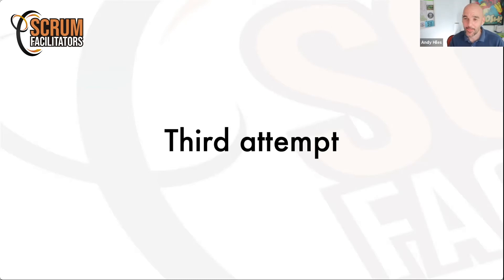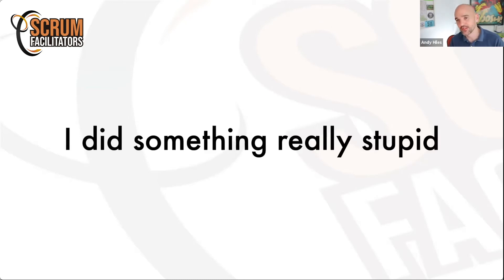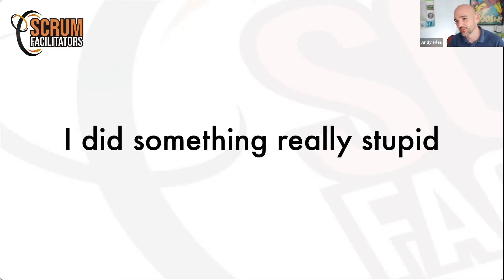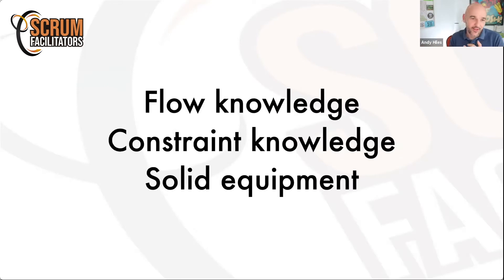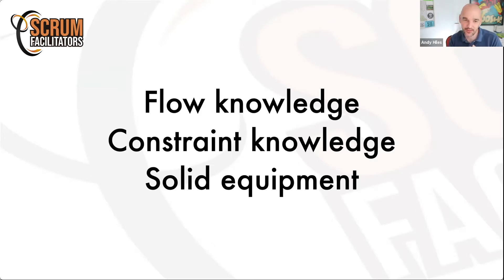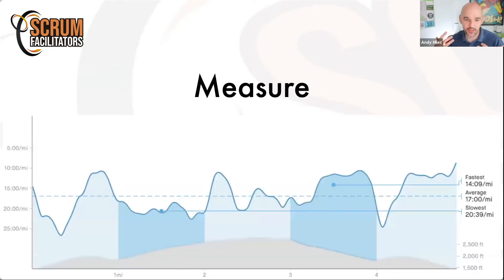The third attempt — I thought I can do this, and I did something really stupid: I signed up for the double. You do the event in the day and then again at night. What I needed to know going in was flow knowledge, constraint knowledge, and solid equipment. Back to mastering my flow, mastering the measures, understanding and actively managing the information I was getting throughout my workflow.